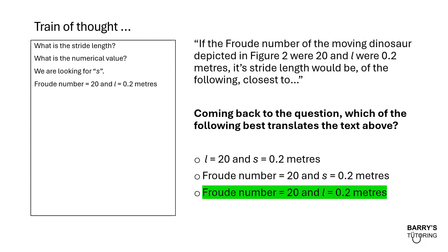It says that the Froude number of the moving dinosaur depicted in figure 2 were 20. So the Froude number is 20 and it says L were 0.2 meters. So it's saying L is equal to 0.2 meters. Let's keep on going.